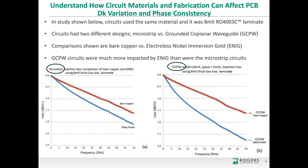An example on 8 mil RO4003C: for microstrip, bare copper versus ENIG (electroless nickel immersion gold — nickel is ~1/4 the conductivity of copper with magnetic loss) shows a ~0.5 dB/inch difference at 50 GHz. For tightly coupled grounded coplanar waveguide, the same comparison shows a 1.2 dB/inch difference — more than double, due to the four affected conductor sidewall areas. The only metal finish as conductive as or better than copper is immersion silver; immersion tin, ENIG, and others are more lossy.